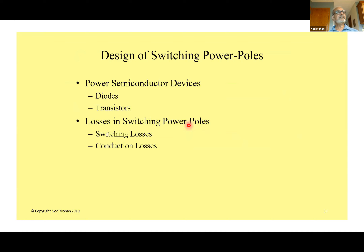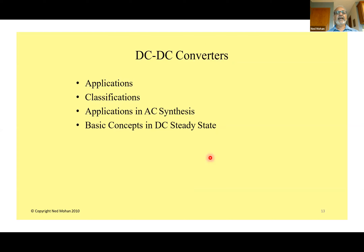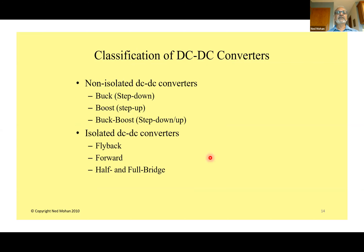Moving on, we look at practical considerations: gate drive ICs, thermal considerations, magnetic components, capacitor selection, and selection of switching frequency. Increasing switching frequency reduces filter size but increases losses — so there are trade-offs. Diode reverse recovery current also plays a role. Then we move on to DC-DC converters: non-isolated converters — buck, boost, and buck-boost — and isolated DC-DC converters derived from non-isolated converters.